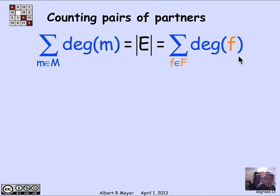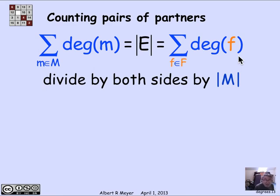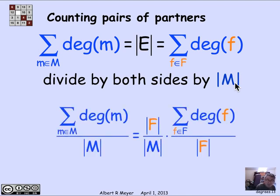Because every time there's a liaison, it involves one male, one female. Now let's just do a little bit of elementary arithmetic. I'm going to divide both sides of this equality by the size of the male population, by the number of men. And if I do that, I get this formula.